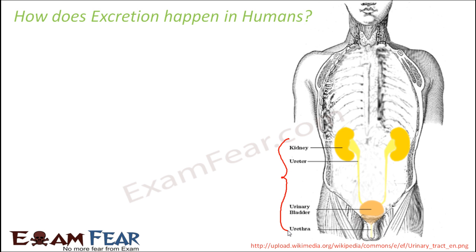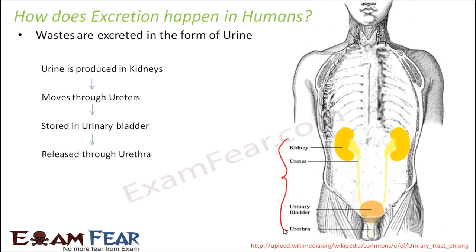The first thing that happens is all the wastes are excreted in the form of urine. The wastes inside our body could be any nitrogenous waste like urea, or ammonia which got converted into urea. So all these waste products are excreted in the form of urine. Urine formation takes place in the kidneys through a complex process.